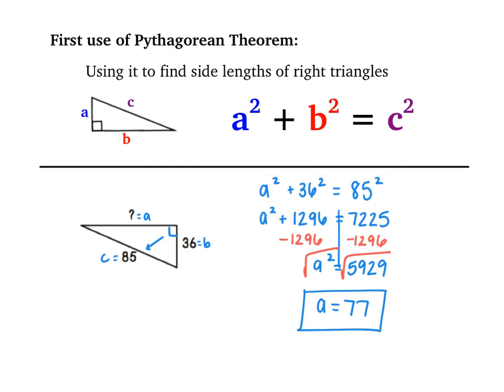You had one of each example. The first example was finding the hypotenuse, and the second example was finding one of the legs if you're given the hypotenuse.